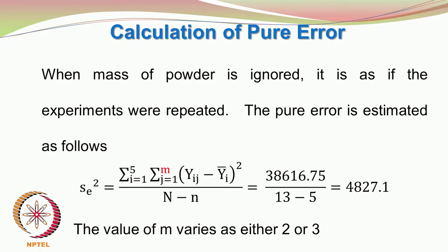Now we will discuss the calculation of the pure error. When we ignore the mass of the powder, it is as if the experiments are being repeated. The experimental settings corresponding to the mass of the powder are not taken into consideration, so it is as if we are doing some repeats. Please look at the table and confirm this for yourself.